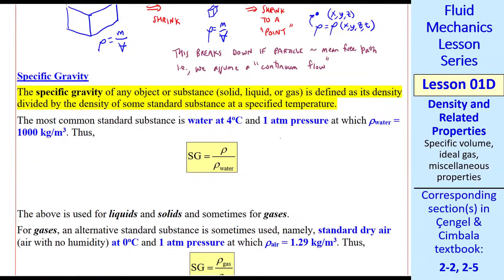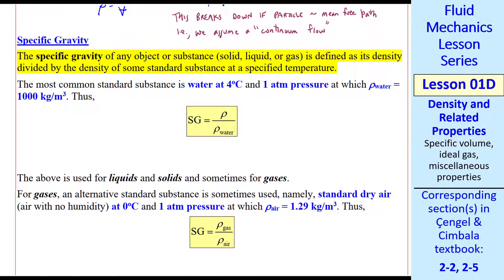Specific gravity is defined as density divided by the density of some standard substance. The most common standard substance is water at 4 degrees C and 1 atmospheric pressure. And that's because the density of this water is 1000 kg per meter cubed, a nice round number.